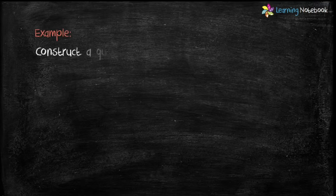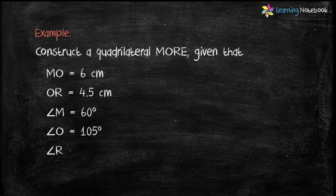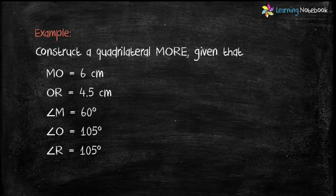The question is: construct a quadrilateral MORE given that MO equals 6 cm, OR equals 4.5 cm, angle M equals 60 degrees, angle O equals 105 degrees, and angle R equals 105 degrees. In this question, we are given two adjacent sides of the quadrilateral — sides MO and OR — and three angles: angle M, angle O, and angle R.